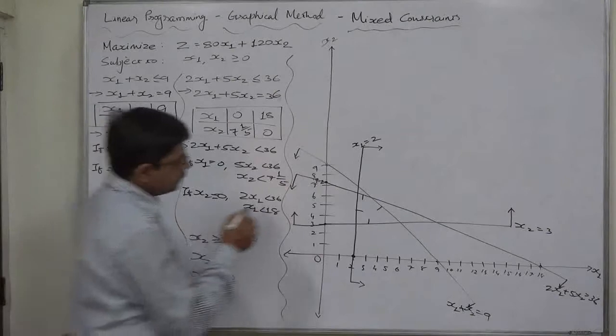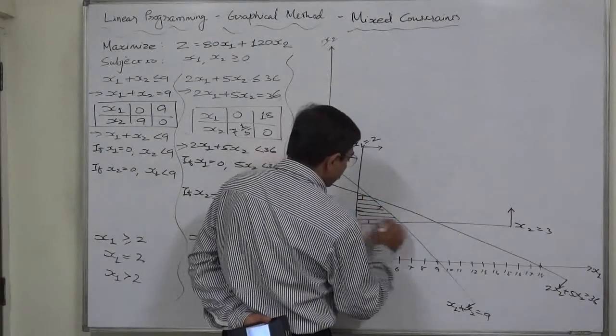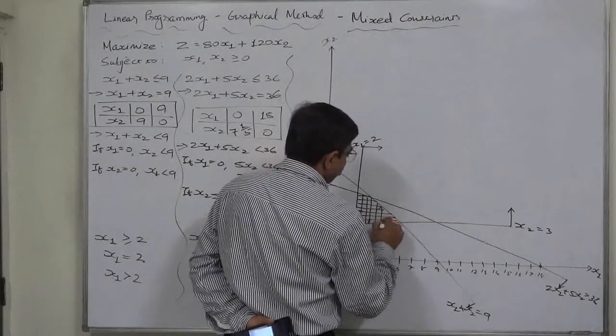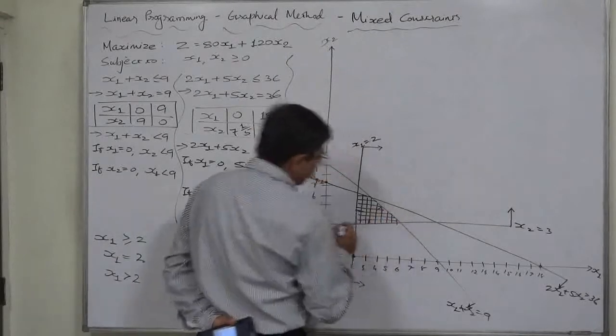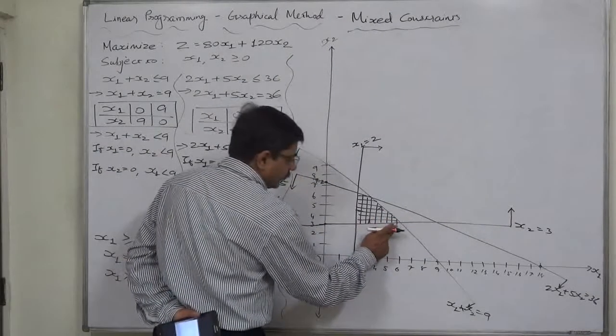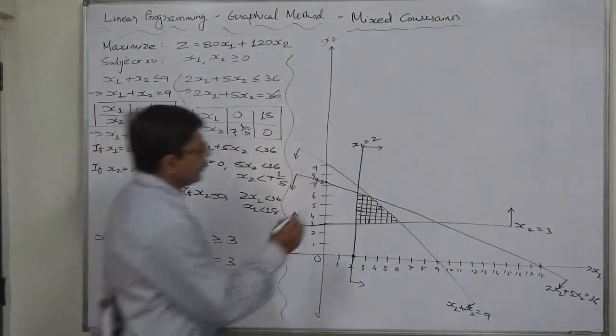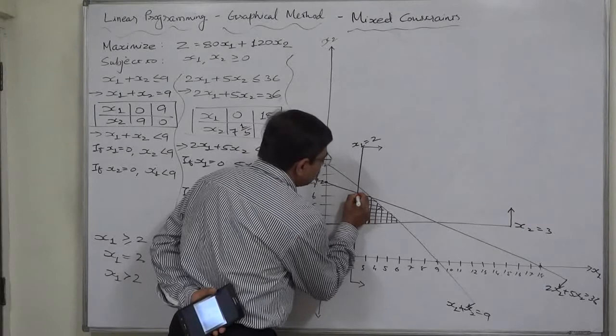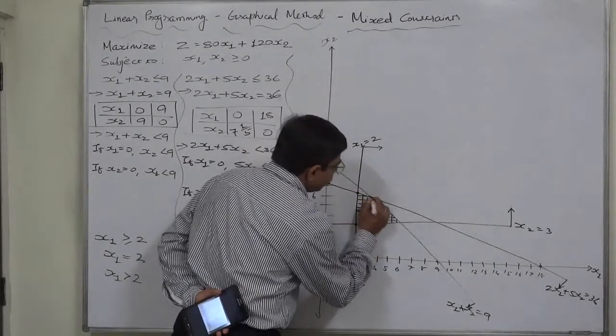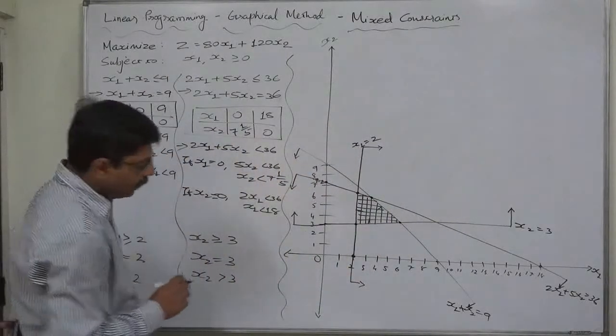So this will be the common region of all four inequalities. That means this is the feasible region. And as we know that by virtue of fundamental law, the optimal solution lies at any of the corner points of the feasible region. We have four corner points.